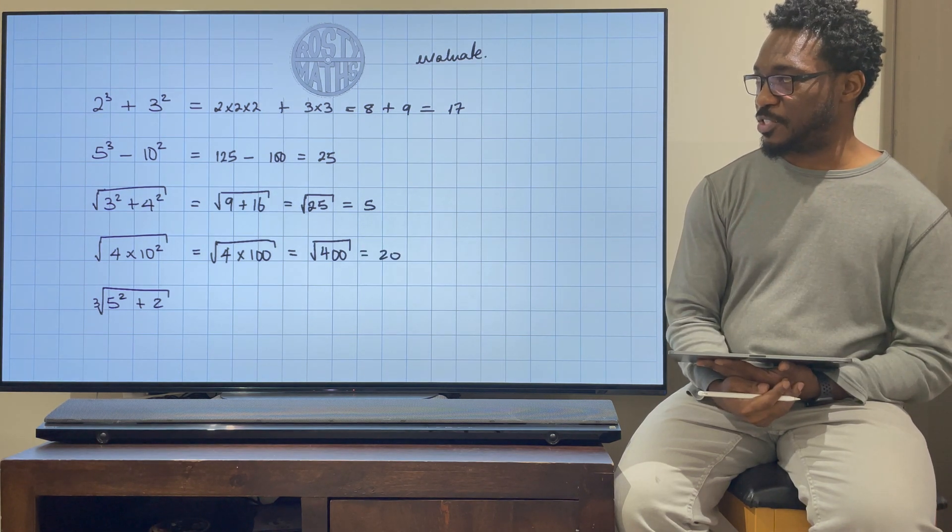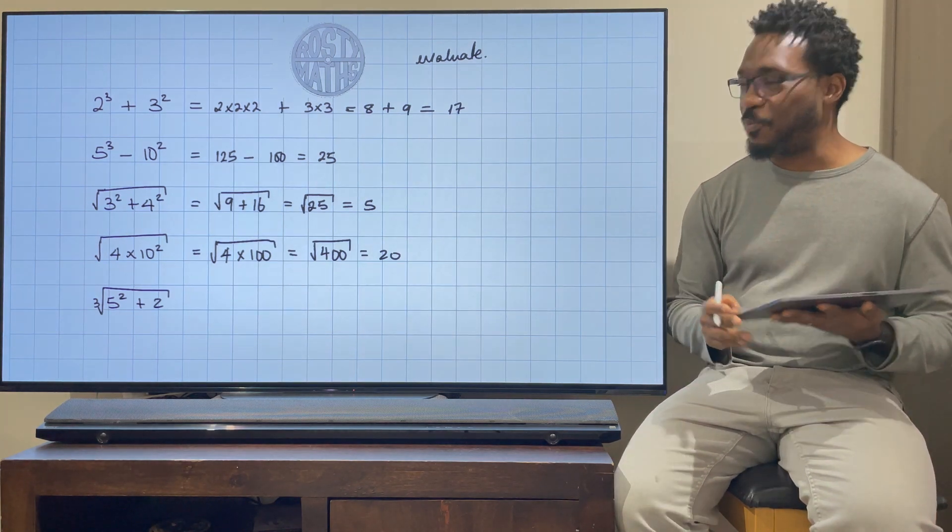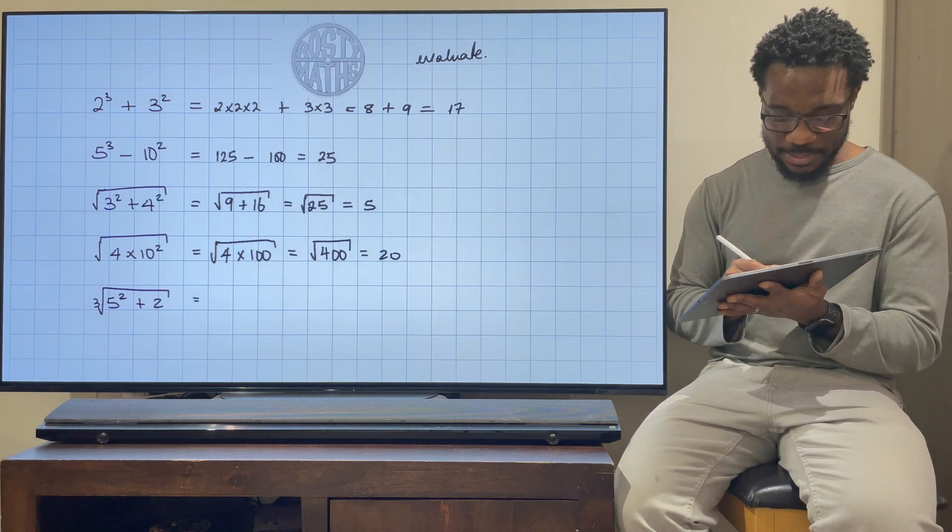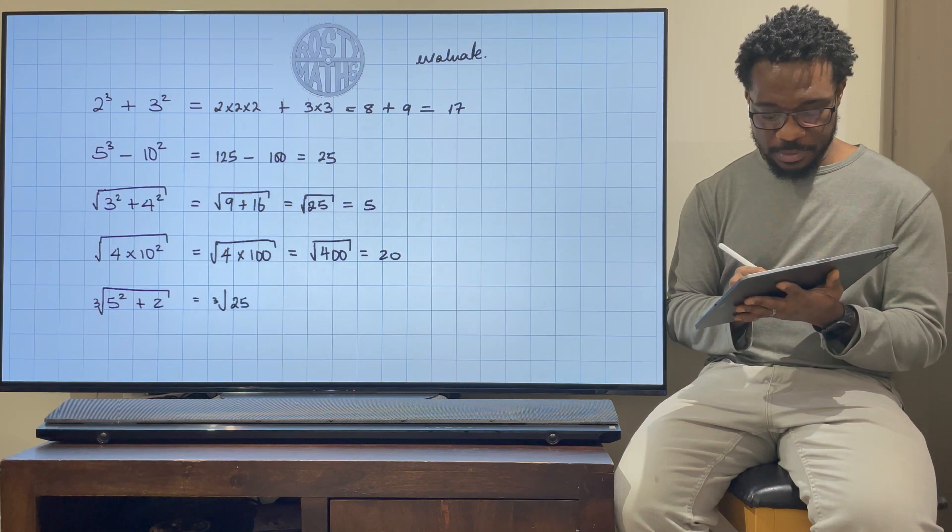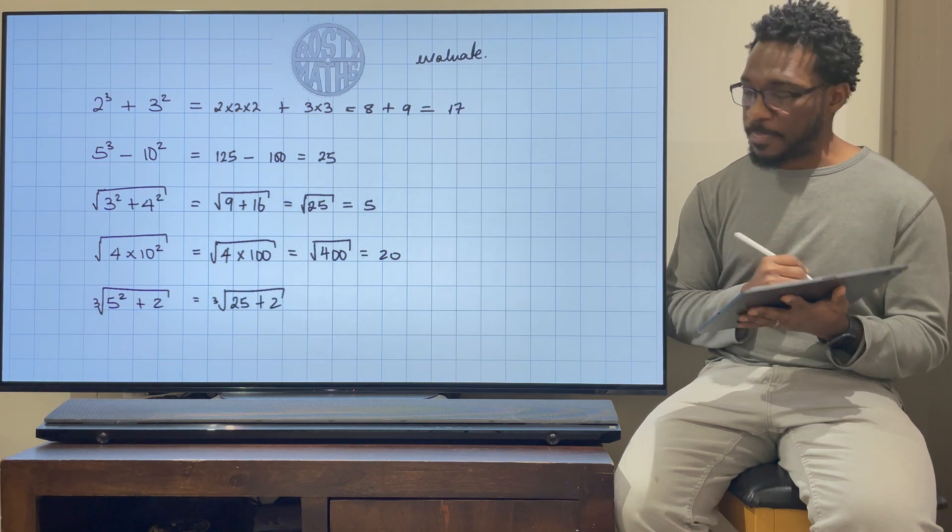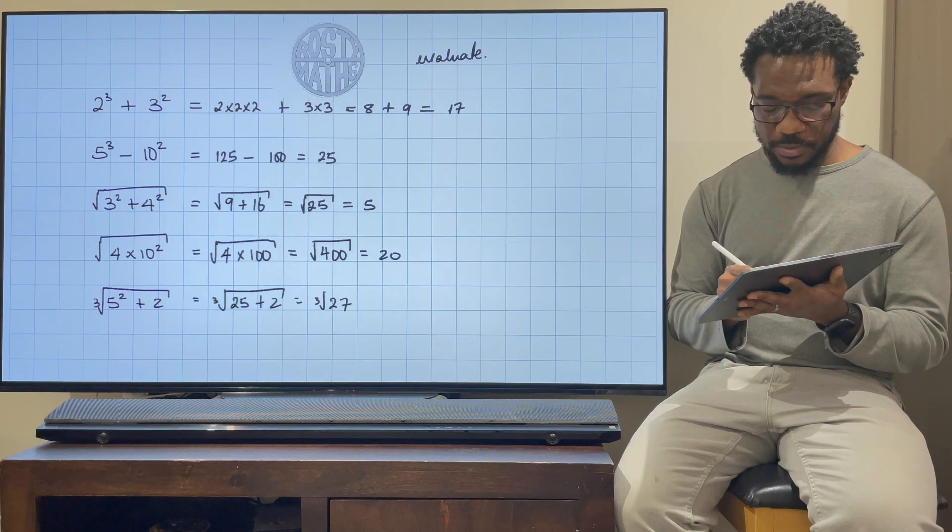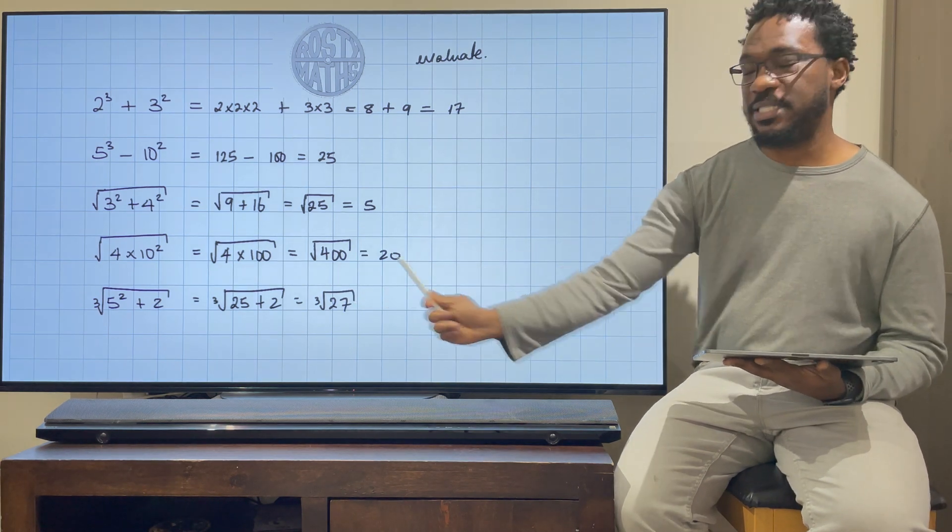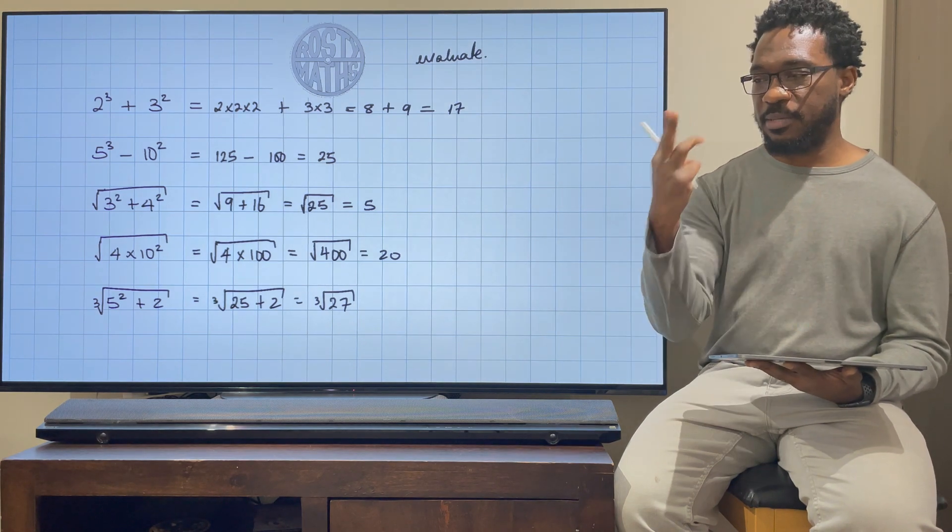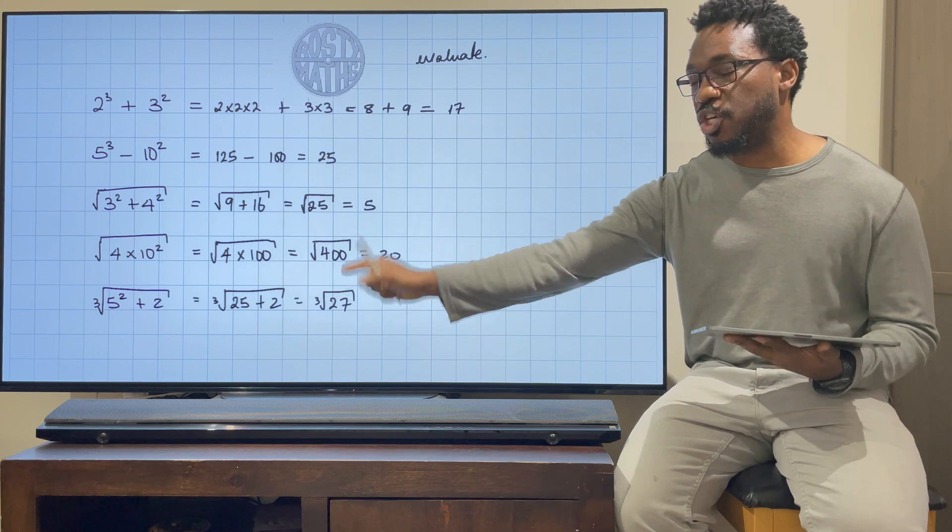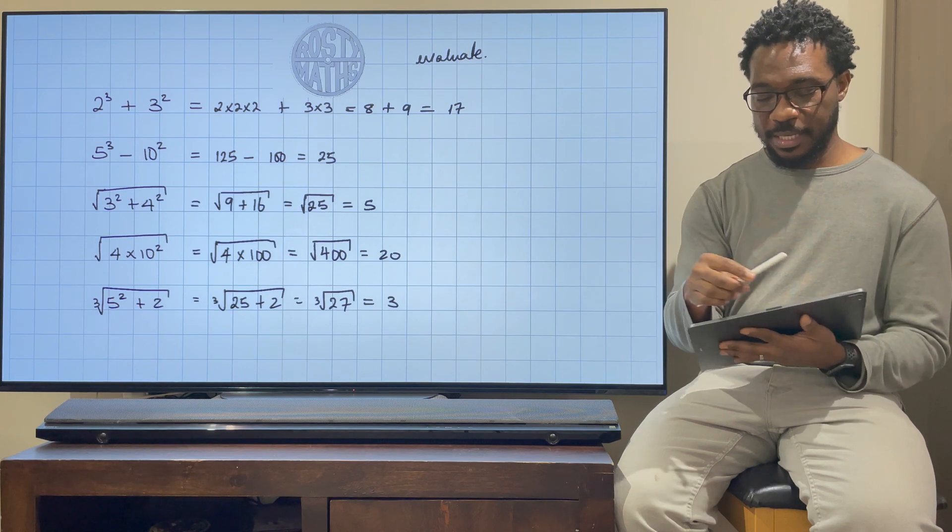And to finish off our lesson for today, we've got a cube root down the bottom. Why not? Let's go for it. So that's going to be the cube root of 5², which gives us 25, plus 2. We add the 25 and the 2, so we still got the cube root. So we got 25 + 2 is 27. 27 is a cube number because 3 × 3 is 9, times another 3 is 27. So its cubed factor is going to be 3, so this answer is just 3, and it's done.